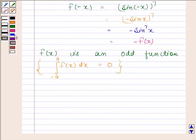As f is an odd function, therefore the integral of sin^7(x) from -π/2 to π/2 is 0.